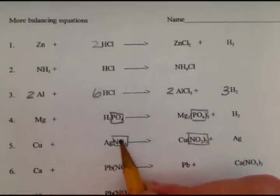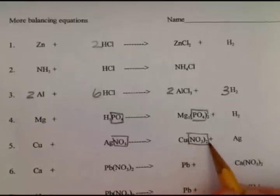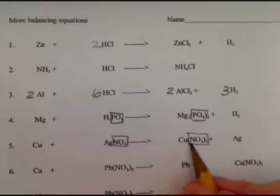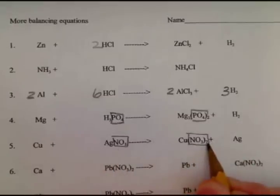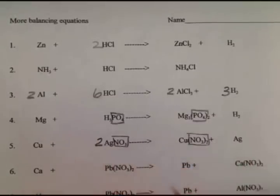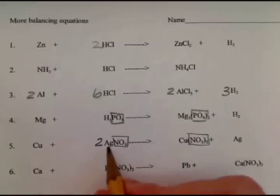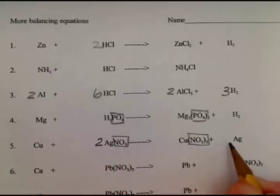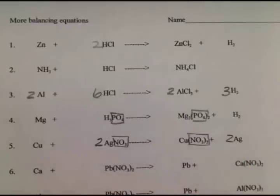So since I have two nitrates on this side and one nitrate on this side, I need to put a 2 right there. Now I messed up my silver, so I got to put a 2 right there.